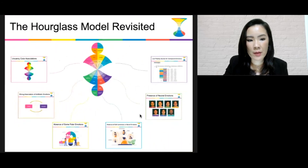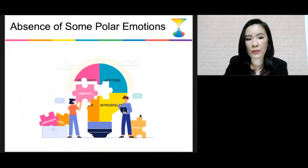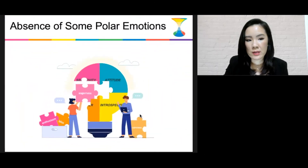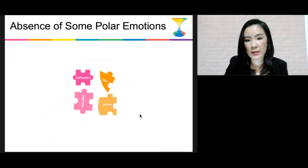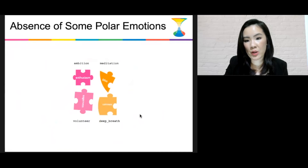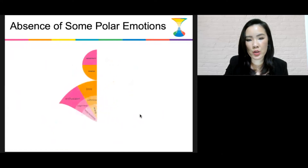There are also some absences of important emotions — absence of polar emotions such as eagerness and calmness. All the concepts associated with such emotions, such as ambition and meditation, were going undetected by the old model and miscategorized as neutral. In the new model, we include them in the hourglass of emotions.